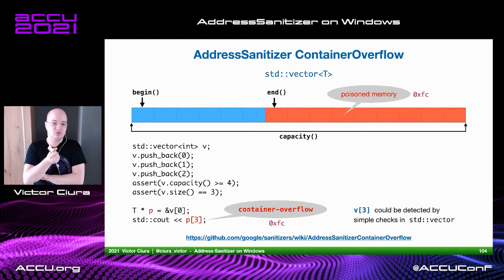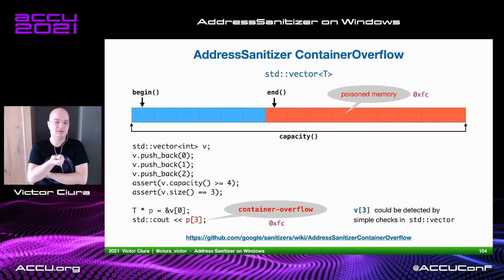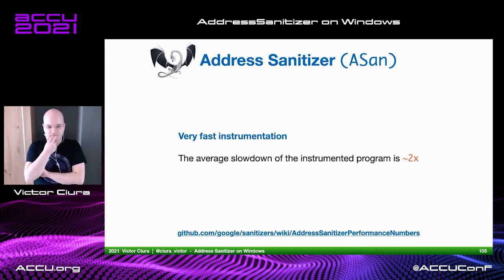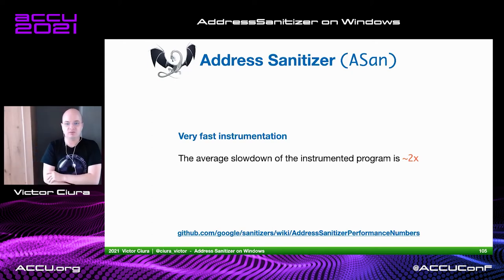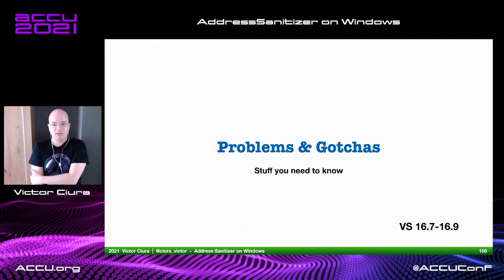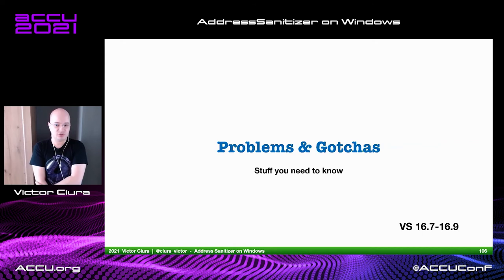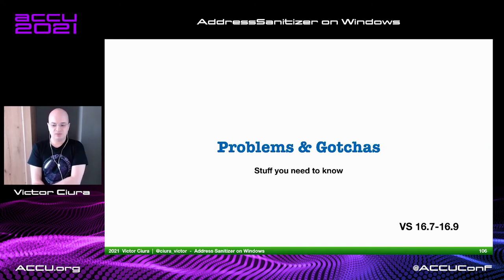I'd like to see support for this extended to the `std::vector` implementation in Visual Studio and to other STL data types. In terms of performance, the instrumentation is very fast — your average slowdown on an instrumented program is around 2x. In my experiments it's even less than that, so I'm really optimistic that this can be leveraged by a lot of people.